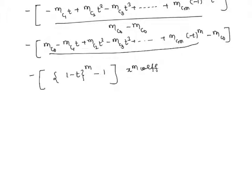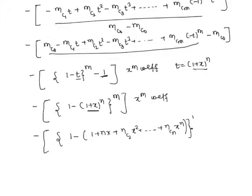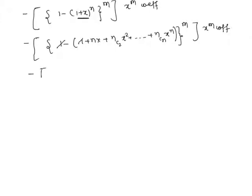Now substituting t equals 1 plus x whole power n, we get minus of 1 minus 1 plus x whole power n, whole power m minus 1. We expand 1 plus x whole power n as 1 plus nx plus nC2·x squared plus dot dot dot plus nCn·x power n, so 1 minus 1 plus x power n becomes minus nx minus nC2·x squared minus dot dot dot minus nCn·x power n, and we raise this to the power m.